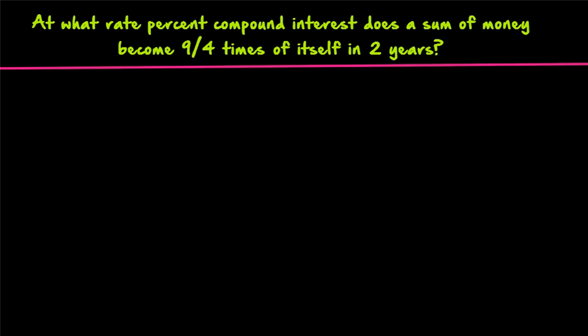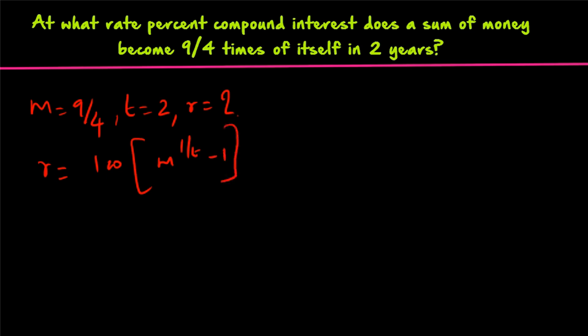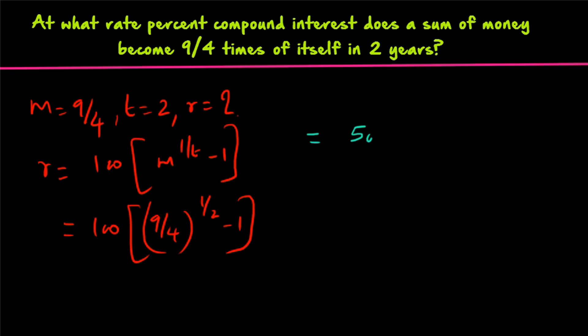Question 3: At what rate percent compound interest does a sum of money become 9/4 times of itself in 2 years? Here M = 9/4 and T = 2. Applying the formula: R = 100 × ((9/4)^(1/2) − 1). Now (9/4)^(1/2) means the square root of 9/4, which equals 3/2. So 3/2 − 1 = 1/2. Therefore R = 100 × (1/2) = 50%.